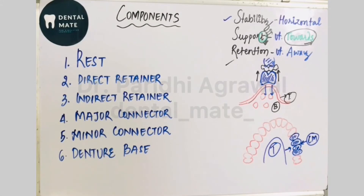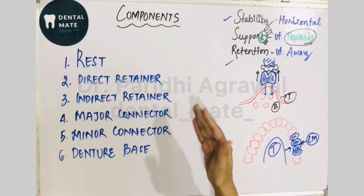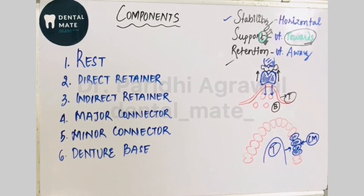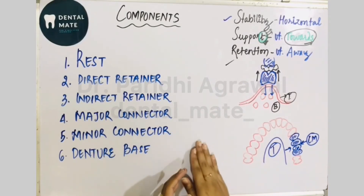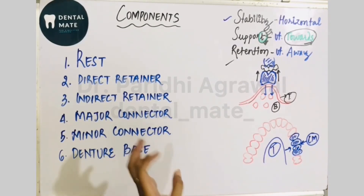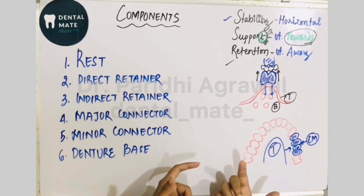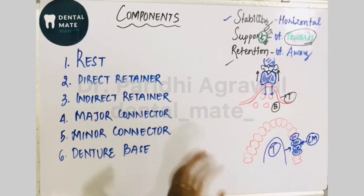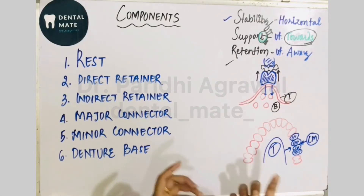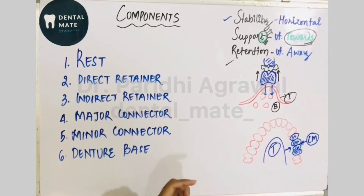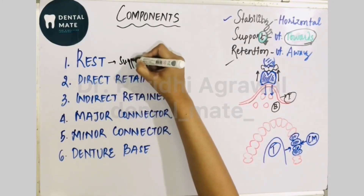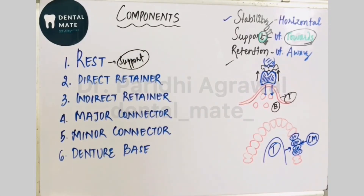The removable partial denture has six different components: the rest and rest seat, the direct retainer, indirect retainer, major connector, minor connector, and the denture base. The rest is a rigid component that rests on a prepared portion of the tooth — which could be the occlusal surface, lingual surface, or incisal surface. Because it rests on a prepared tooth surface, it is called the rest, and it provides support to the prosthesis.